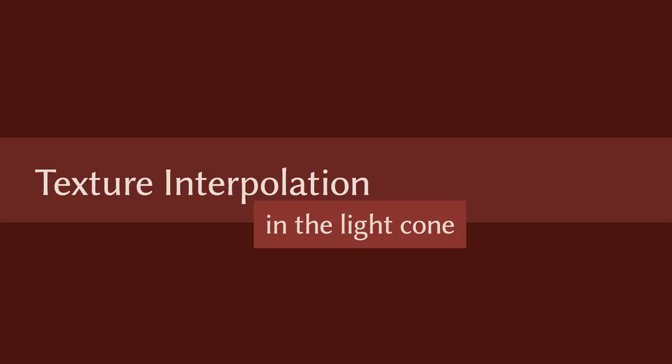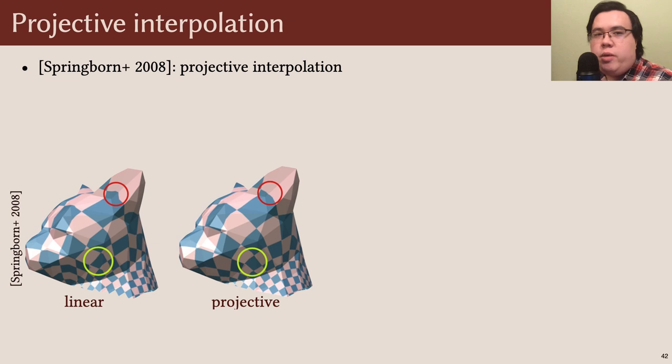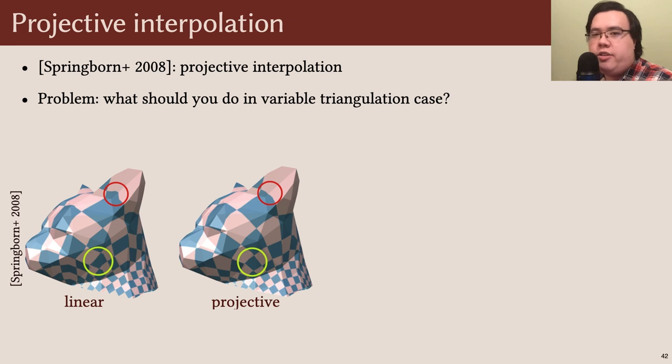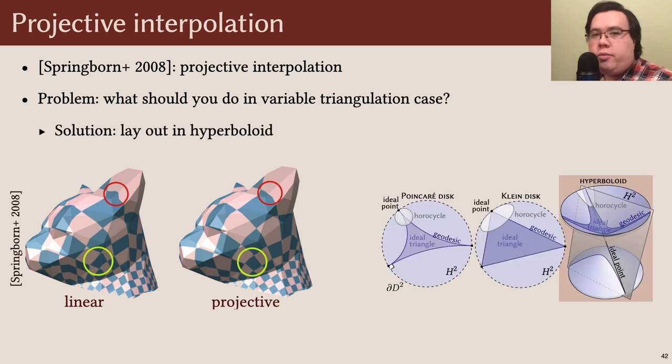I'll discuss our interpolation scheme now. In 2008, Springborn and colleagues showed that in the fixed triangulation setting, you can get smoother maps by performing what's called projective interpolation rather than standard linear interpolation. However, it's not obvious how to perform this projective interpolation across several triangulations. We introduce a new algorithm for variable triangulation projective interpolation based on the hyperboloid model of hyperbolic space.